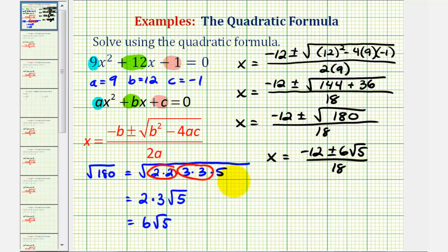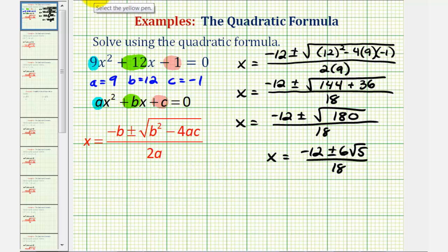But this does simplify, and there are two ways to show the simplification. The way I recommend is just to break this up into two fractions. Since we're dividing by a monomial, we can write this as x equals negative twelve over eighteen, plus or minus six square root of five over eighteen. And now we can simplify each fraction separately.